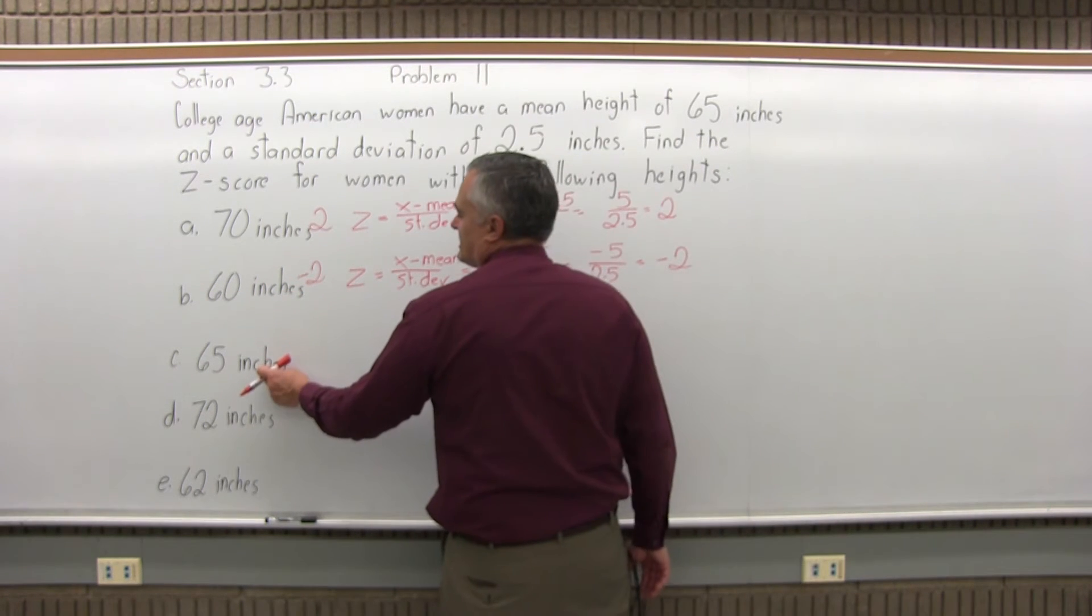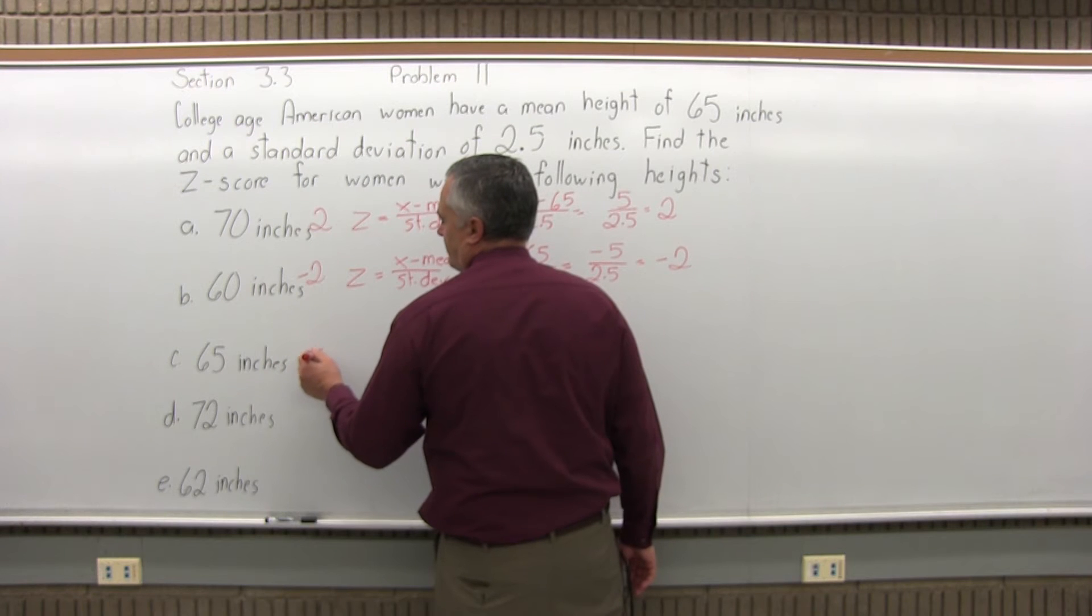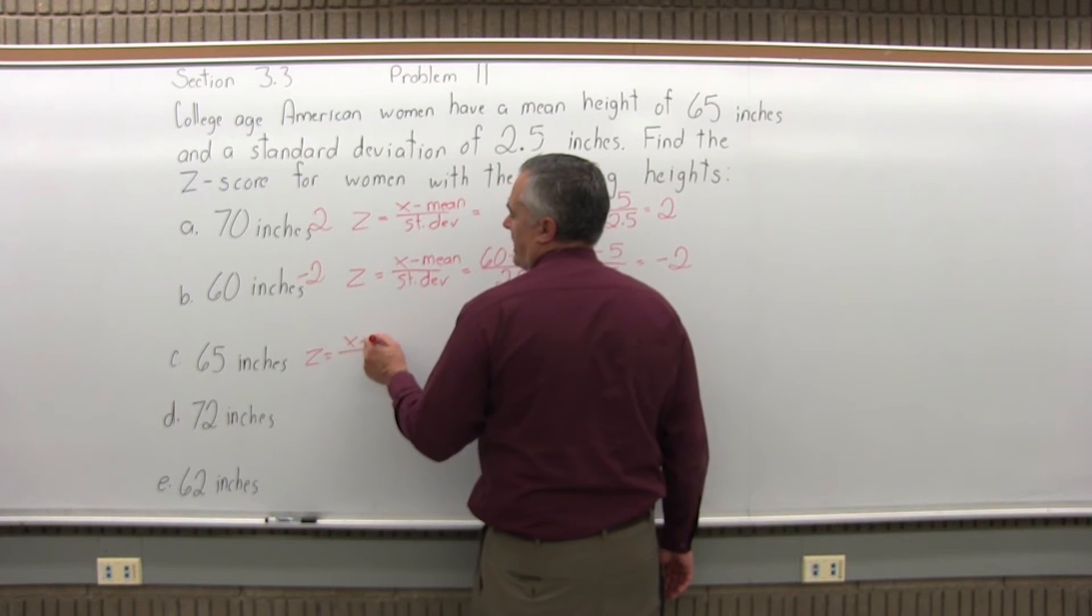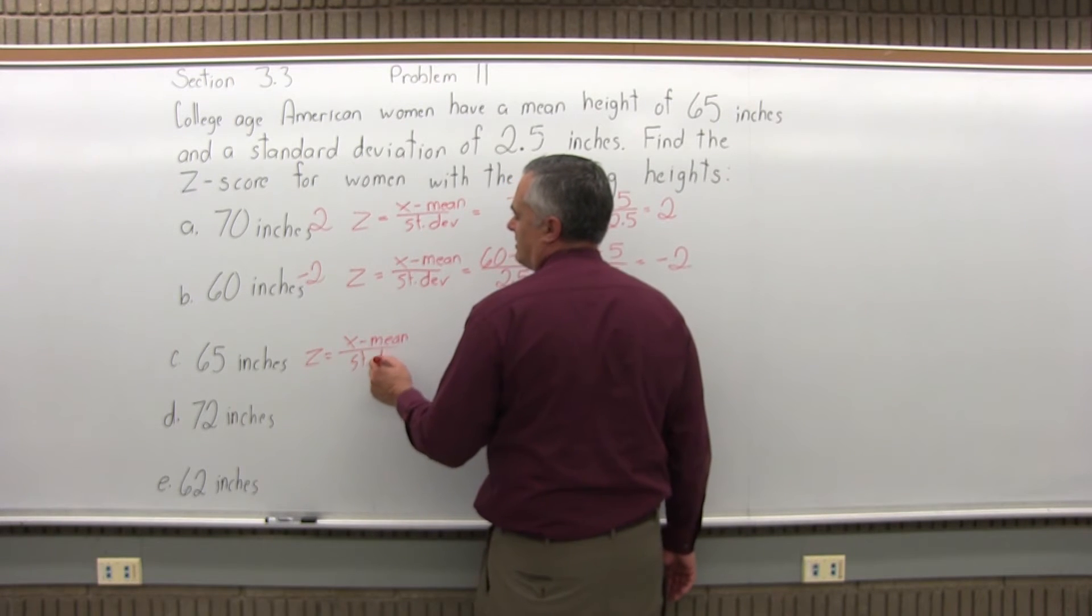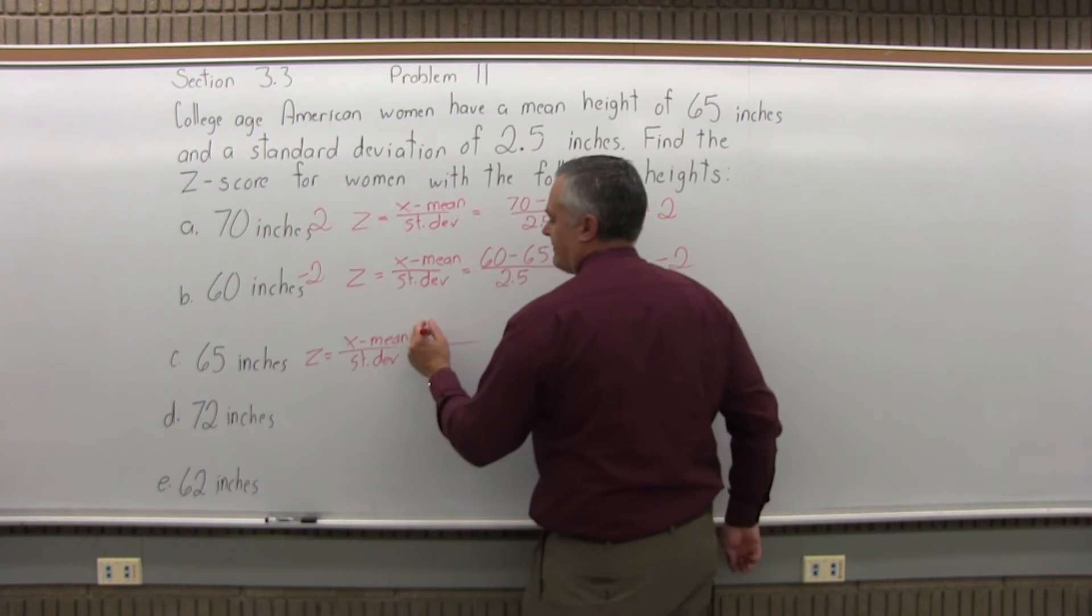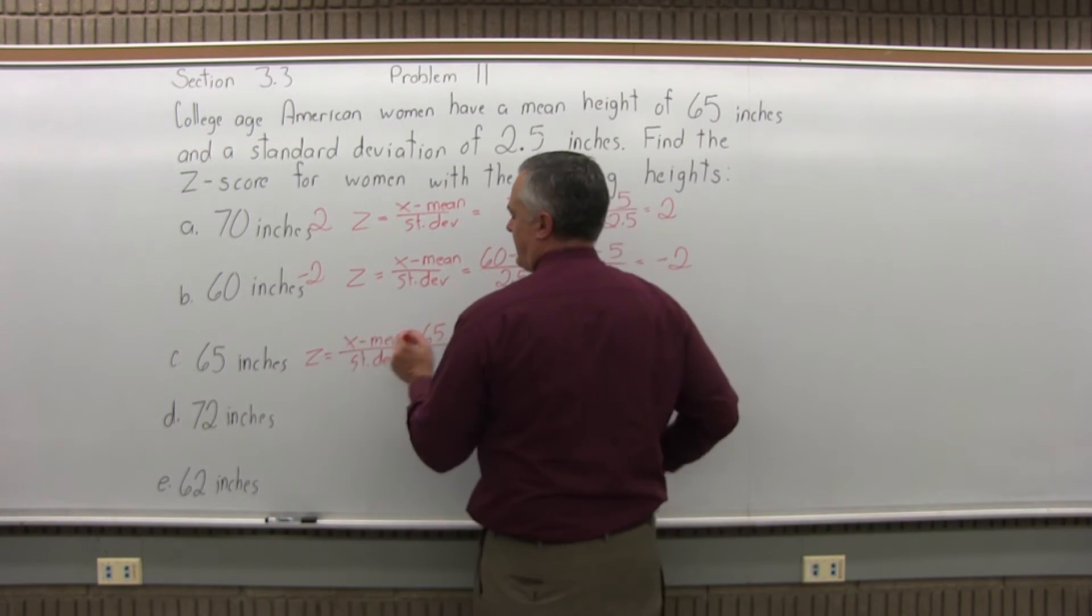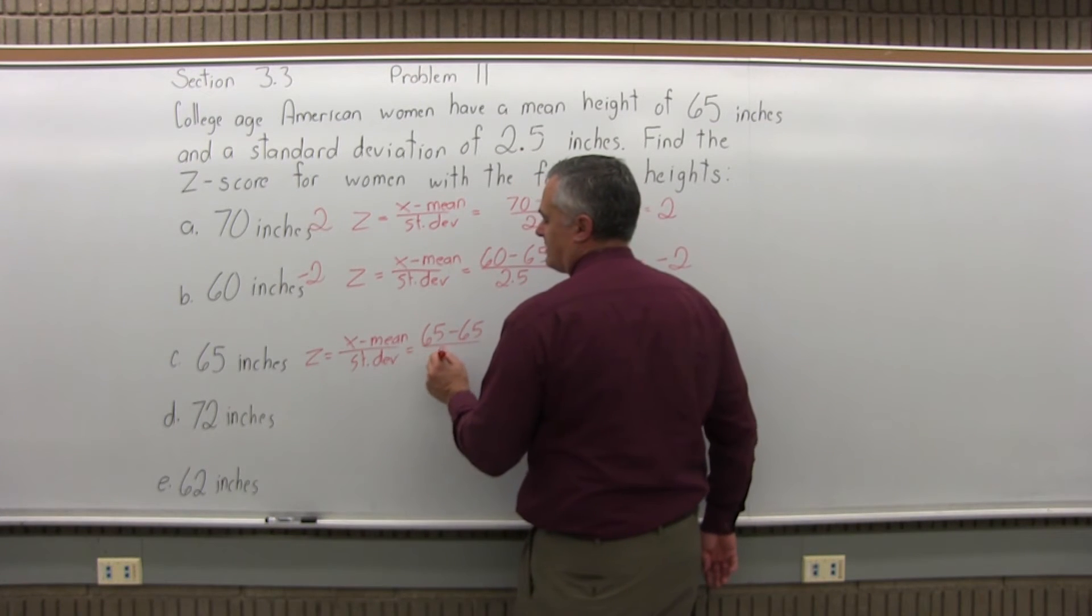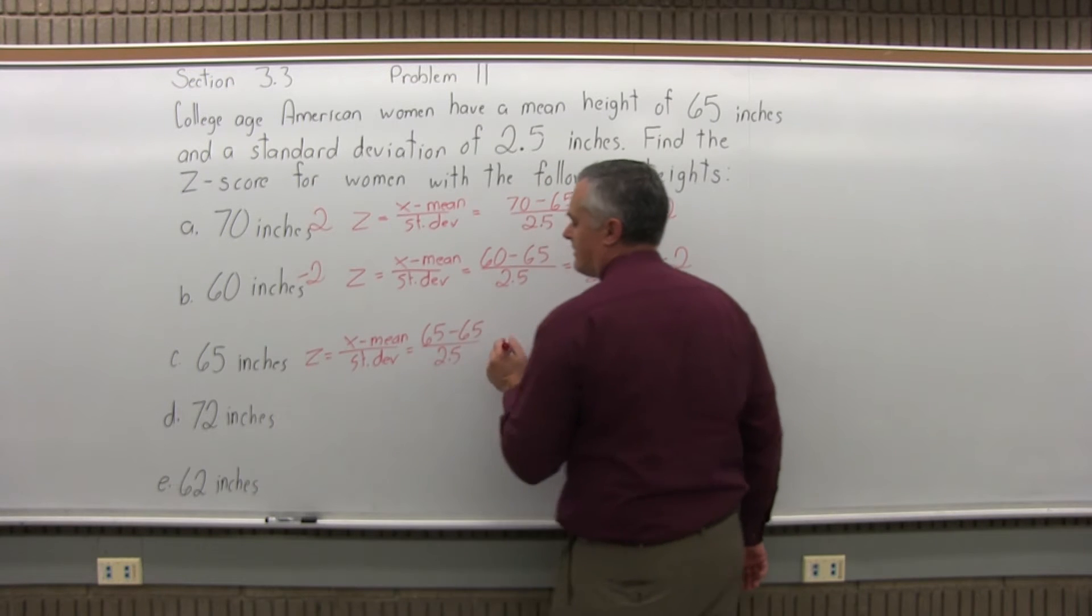How about a woman who's 65 inches tall? Same formula. z equals x minus the mean divided by the standard deviation. For this part, the value of x is 65 minus the mean is also 65 divided by the standard deviation is 2.5 still.